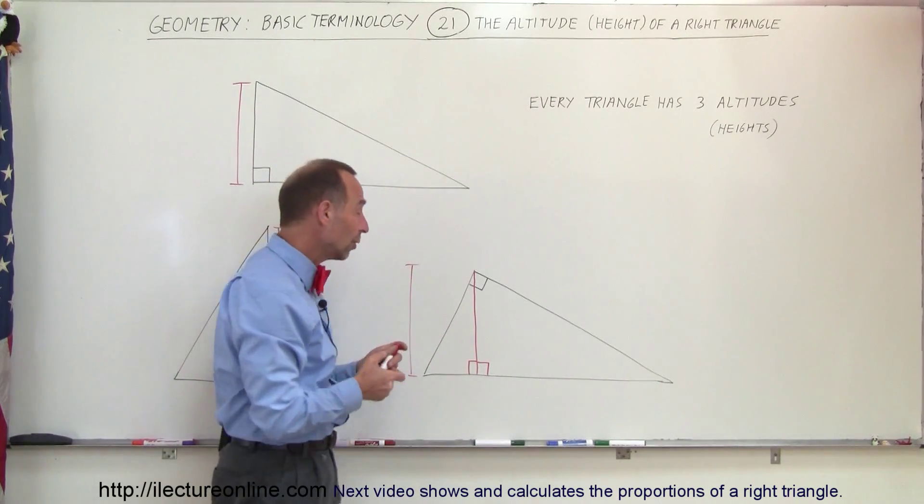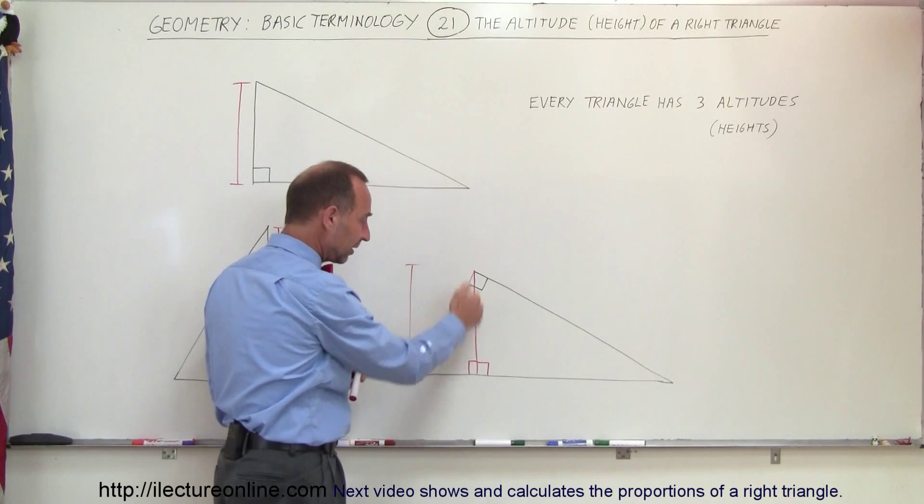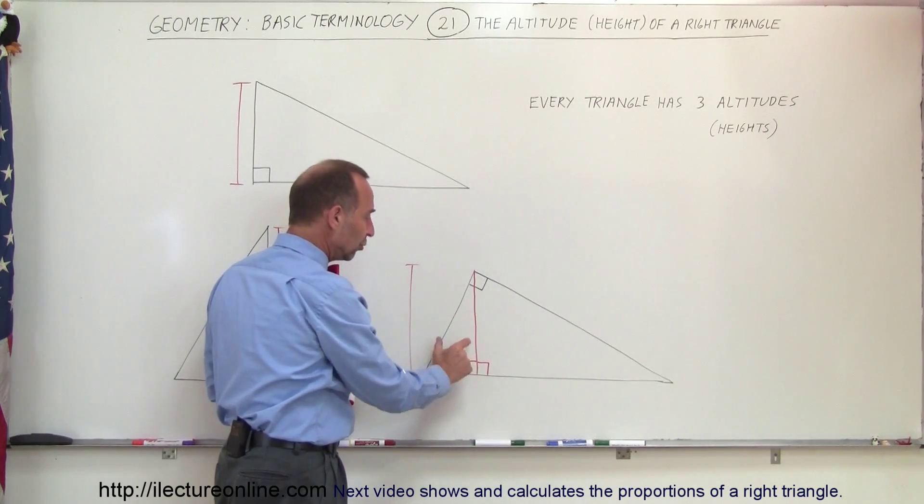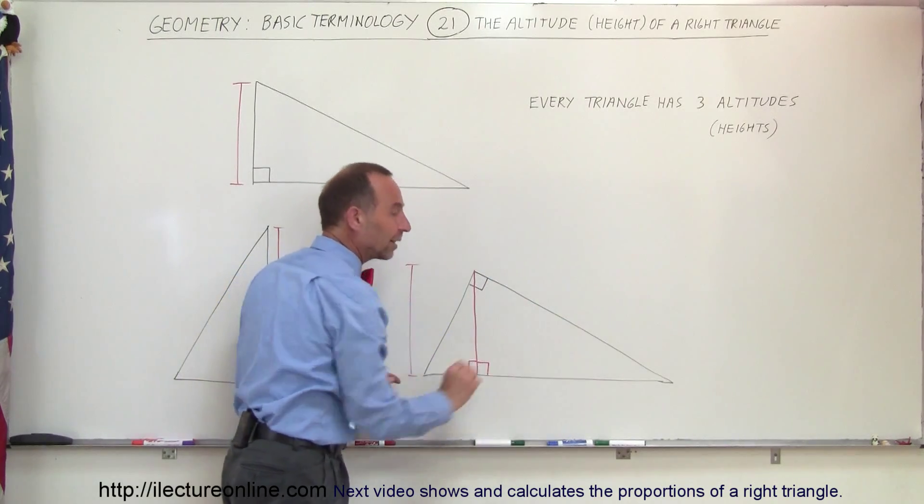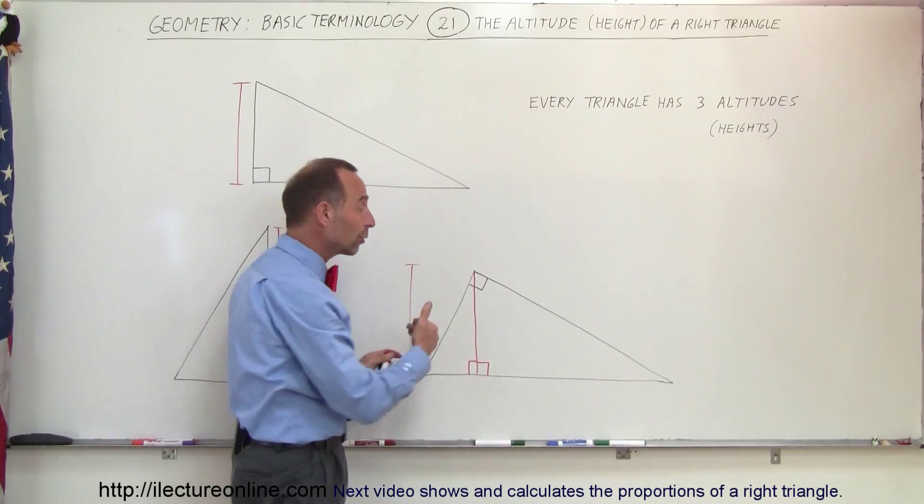Now notice also that by drawing a line straight across like this, we divide the triangle into two smaller triangles—this triangle right here and this triangle right there—and in the next video we're going to compare those two triangles because there's something very special about them.